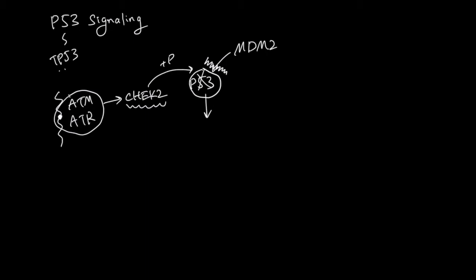Now activated P53 can do one of two things depending on the severity of the DNA damage. If the DNA damage is small and possible to repair, then P53 is going to activate another protein called P21.